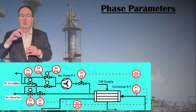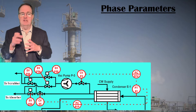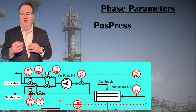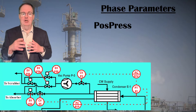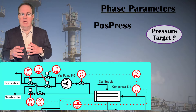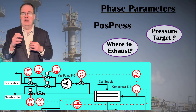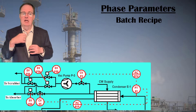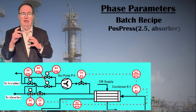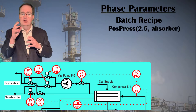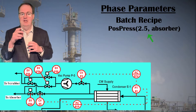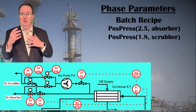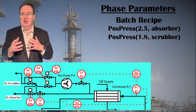Phases may have parameters, which are specific target numbers or instructions to the phase from the recipe that direct how to carry out the phase's task. If our positive pressure phase is called pause_press, it would need a parameter to tell it what pressure to target — let's say in bars — and another parameter instructing whether the vent discharge goes to an acid absorber or to a scrubber. So when used in the batch recipe, the phase name appears with values in brackets, like pause_press 2.5, absorber or pause_press 1.8, scrubber.